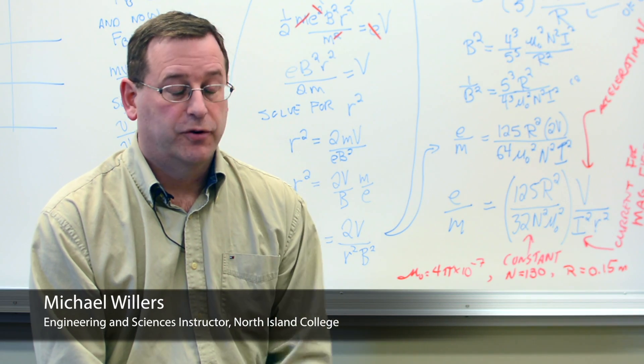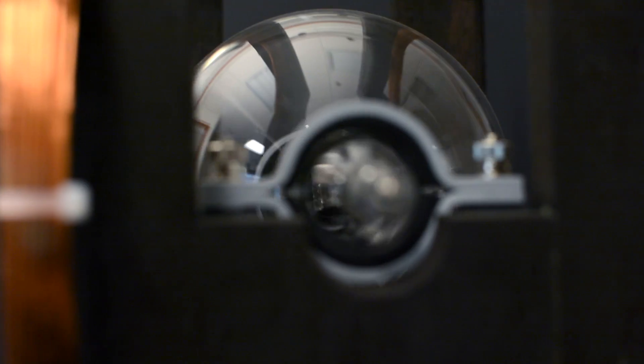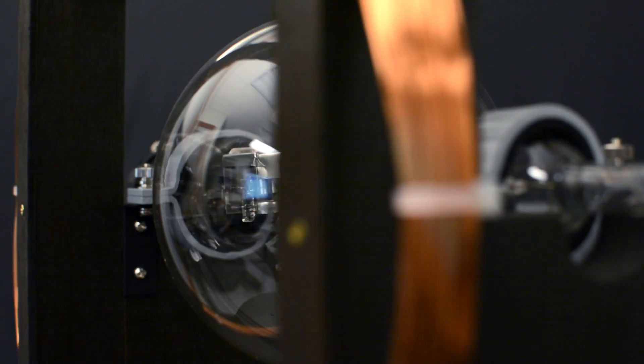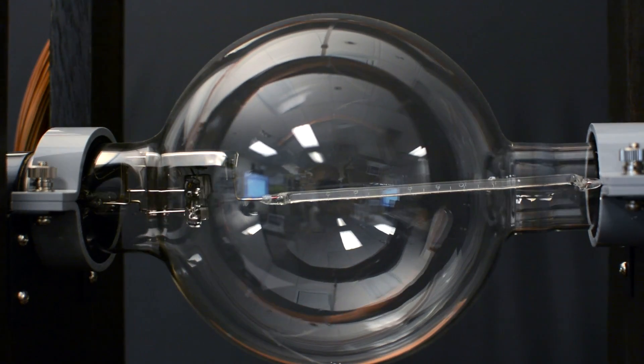The particular EORM lab, we would never be able to do it, whereas with the RWSL we can fire it up. They can modify the accelerating voltage, they can modify the current for the magnetic field, and they can see that the path of the electron changes.